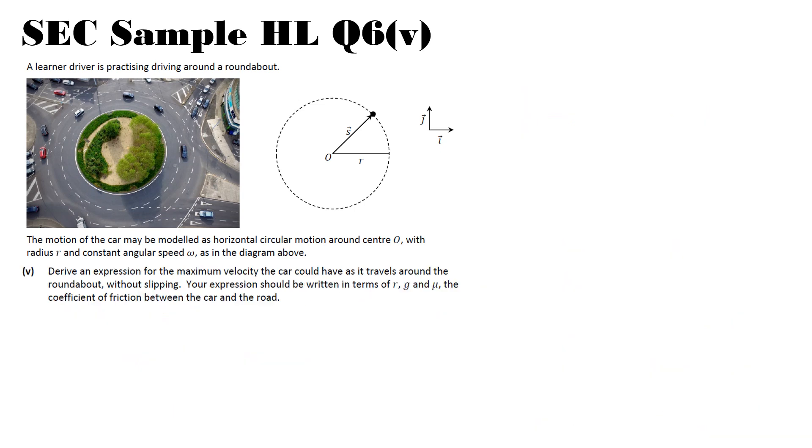So part five, derive an expression for the maximum velocity the car could have as it travels around the roundabout without slipping. Your expression should be written in terms of R, G and mu, the coefficient of friction between the car and the road. So this part is really circular motion.